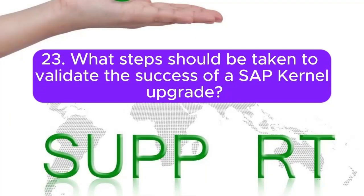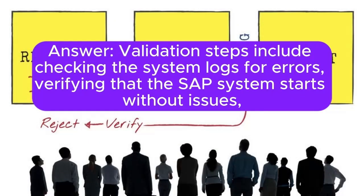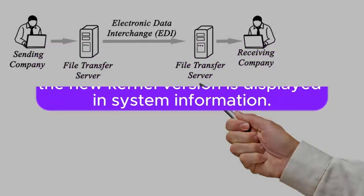23. What steps should be taken to validate the success of a SAP kernel upgrade? Validation steps include checking the system logs for errors, verifying that the SAP system starts without issues, executing transactions to ensure functionality, and confirming that the new kernel version is displayed in system information.